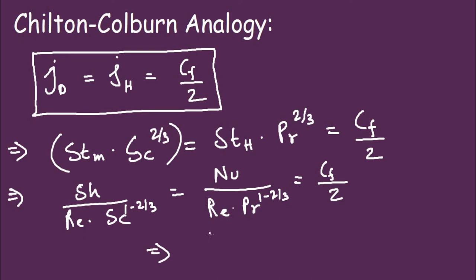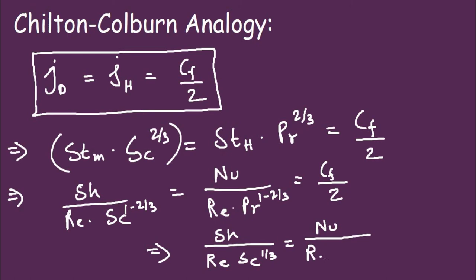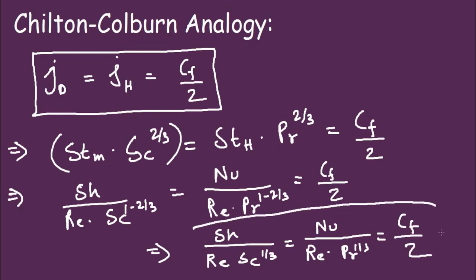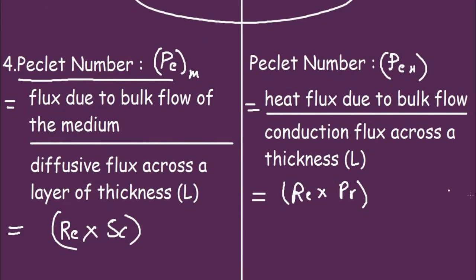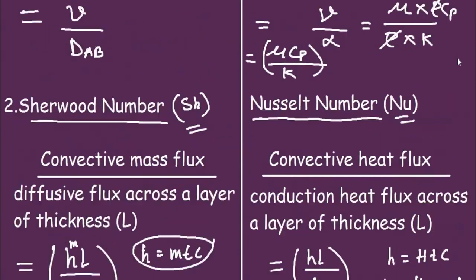The final simplified form of the Chilton-Colburn analogy is: Sherwood number divided by Reynolds number times Schmidt number to the power 1/3 equals Nusselt number divided by Reynolds number times Prandtl number to the power 1/3, equals friction factor divided by 2. These were the various dimensionless groups and analogies between mass transfer and heat transfer operations.